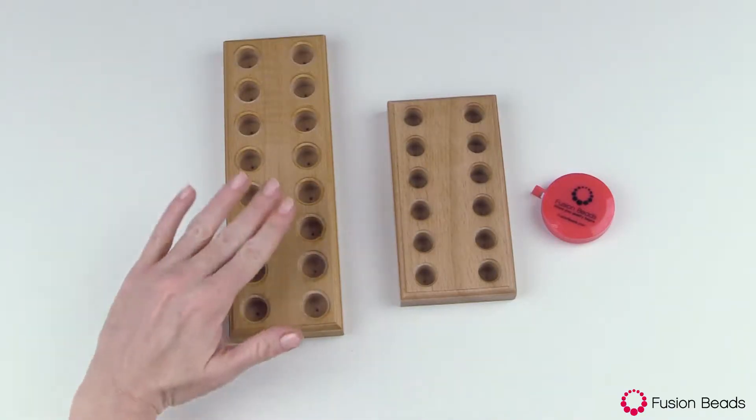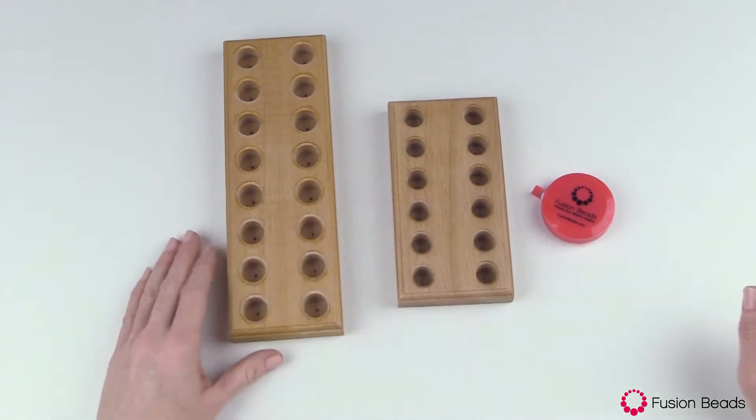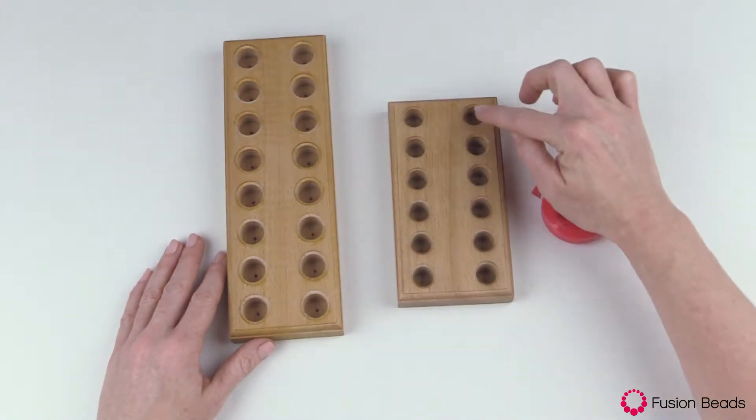Welcome to Fusion Beads. We're looking at these wood block plier stands. There's a large one and a small one, and you'll notice that the large one holds eight pairs of pliers and the small one six.